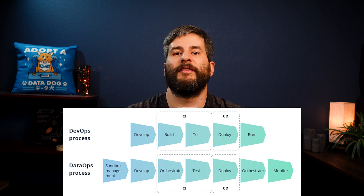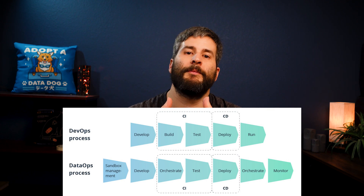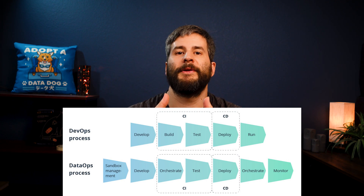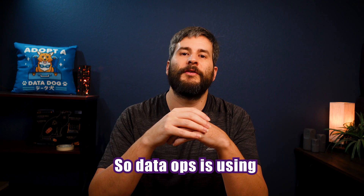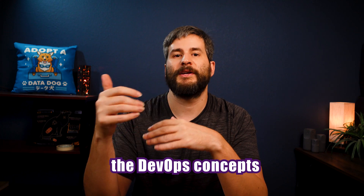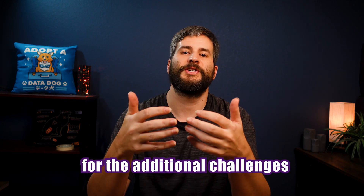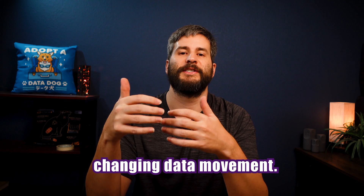The data world has always lagged behind the software world in things like automation. The challenge is that in most software, a change is coded, tested, and deployed to production — once there, it's stable and static until the next change is made. With data, things are always in flux. You write code for a new pipeline, test it, and deploy it, but data is constantly moving through with varying quality and controls from source to sink. So DataOps is using DevOps concepts, just tweaked to account for the additional challenges of constantly changing data movement.